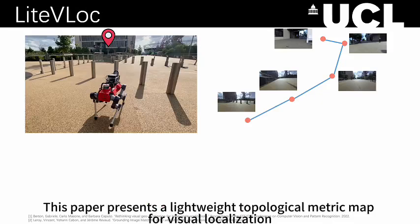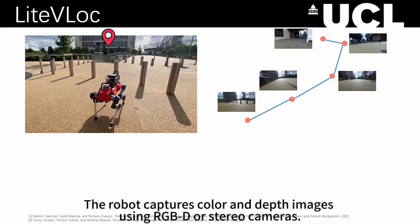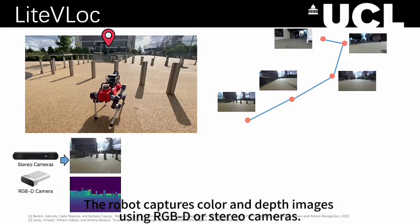This paper presents a lightweight topological metric map for visual localization called LightVLoc, which uses three main modules. The robot captures color and depth images using RGBD or stereo cameras.